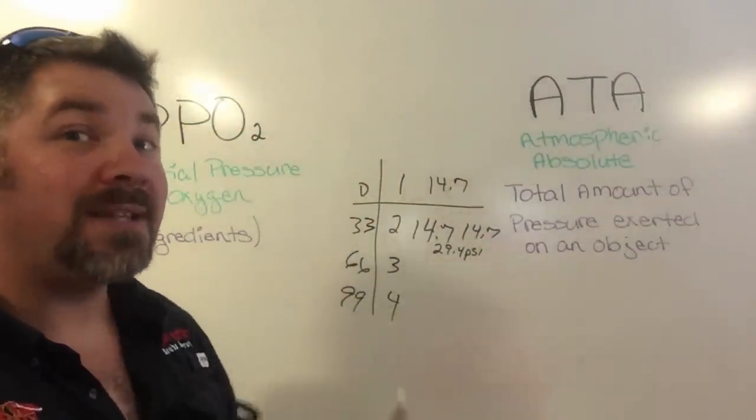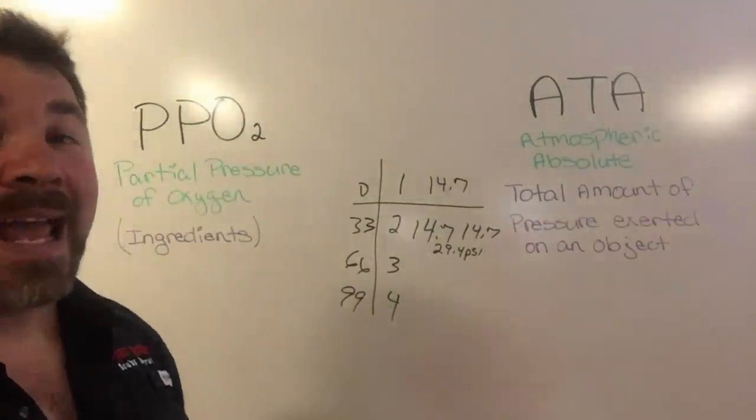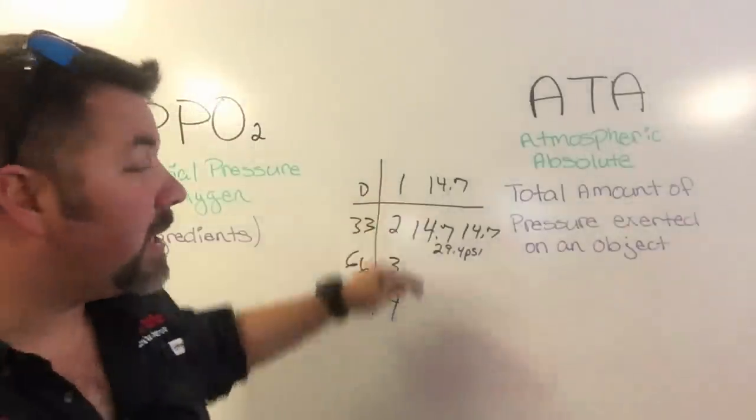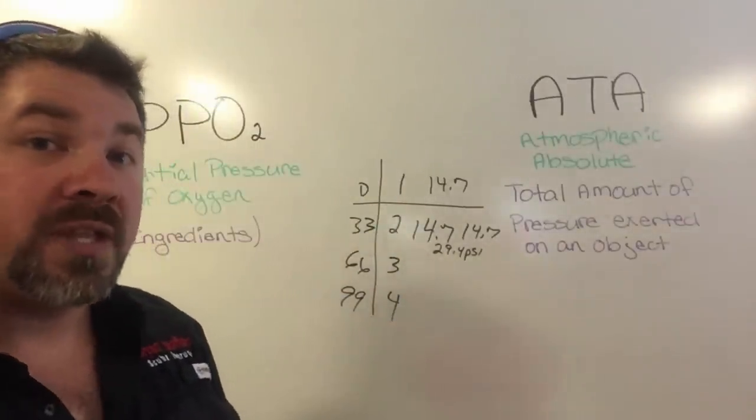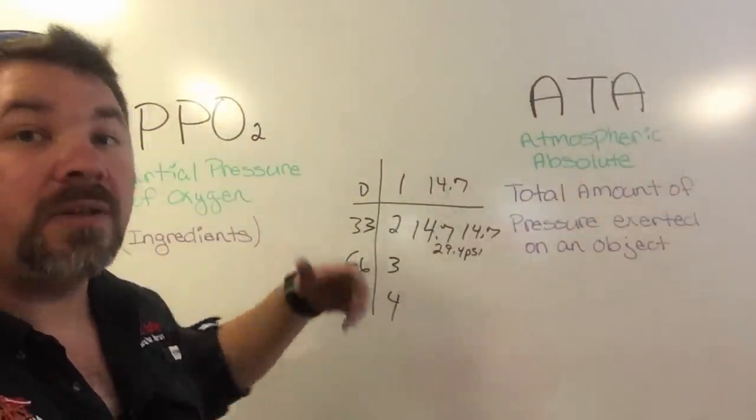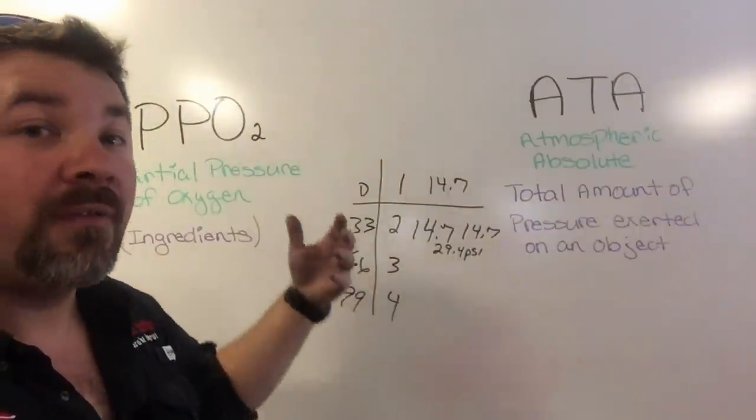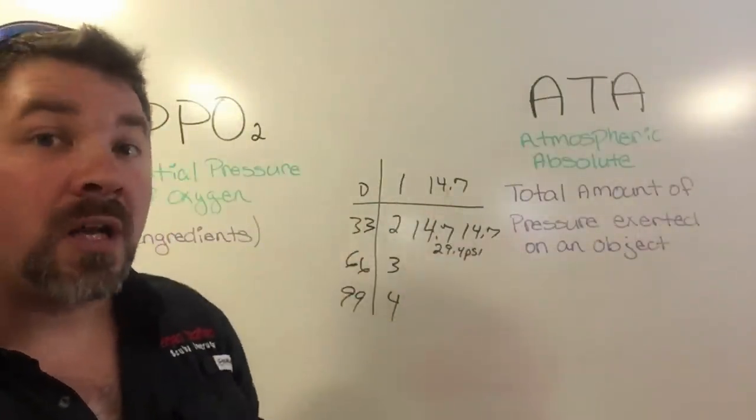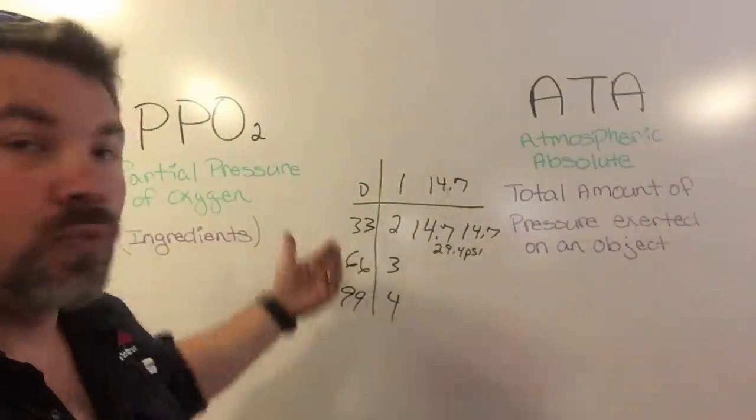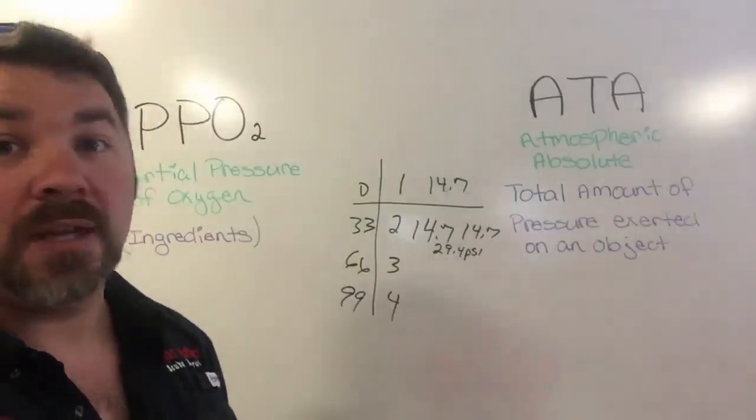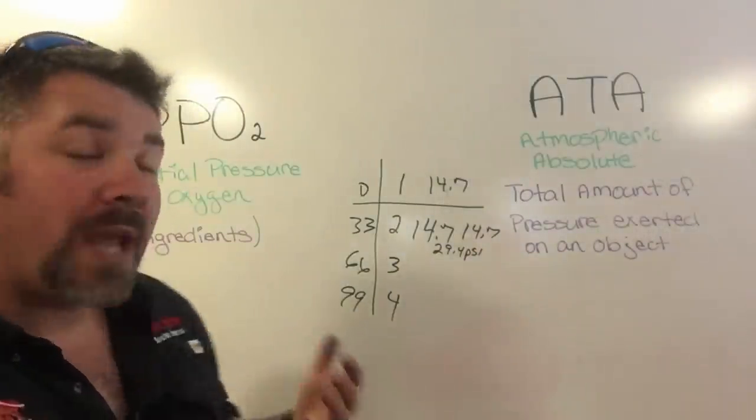Think of atmospheric pressure as the total amount of weight exerted on your body at any given depth. Calculating this is pretty simple if we use increments of 33 feet, 34 feet, or 10 meters. But let's say we're using an oddball depth like 27 feet, 58 feet, or 72 feet.